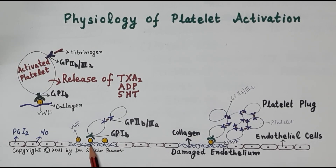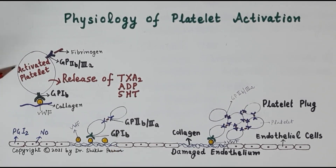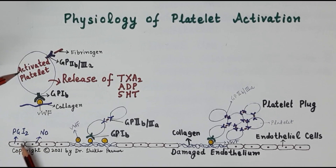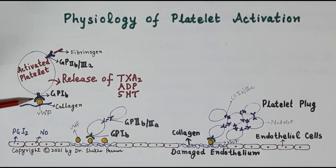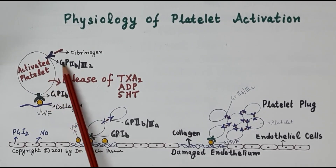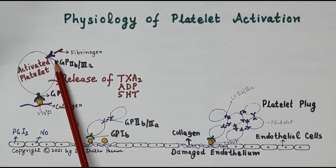As shown clearly in this diagram, the collagen and von Willebrand factor released by the damaged endothelium allow the activated platelet to bind via the GP1b receptor, resulting in further activation of the platelets. These platelets also possess a receptor called the GP2b3a receptor, which is also called the fibrinogen receptor.